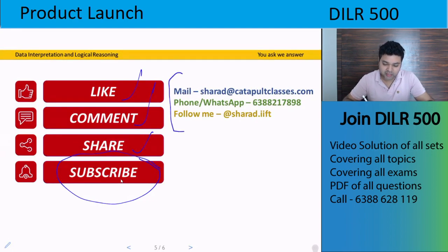And if you want to talk to me for any kind of your queries, like MBA related, career related, profiles related, anything, so you can get in touch with me by dropping a mail at sharad@catapultclasses.com. You can phone or WhatsApp me at 6388-217-898, or you can follow me on Instagram at the rate sharad dot ift. Thank you guys, and keep asking, and enjoy your day.